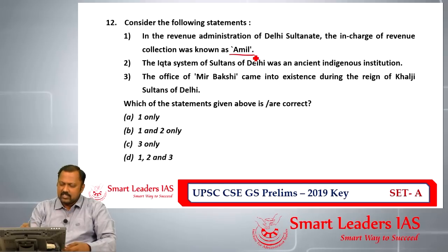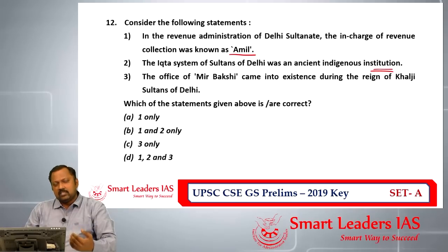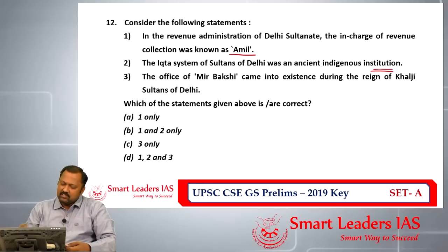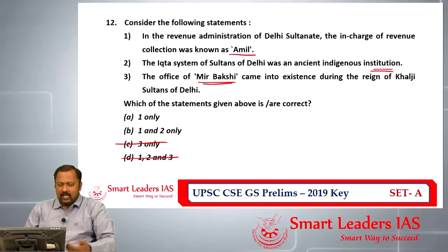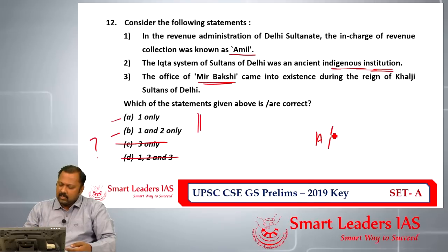Question number twelve is about the revenue administration of the Delhi Sultanate. The first statement — that the in-charge of revenue collection was known as Amil — is correct. The second statement about the Iqta system being an ancient indigenous institution is debatable, since a similar Samanta system existed earlier. The third statement — that the office of Mir Bakshi came during the Khilji Sultans — is incorrect, as Mir Bakshi is a Mughal-era office. The answer for question twelve is A or B.